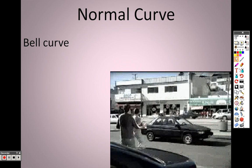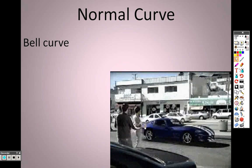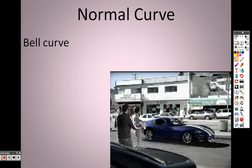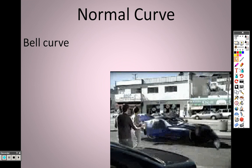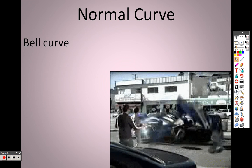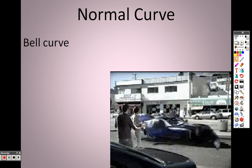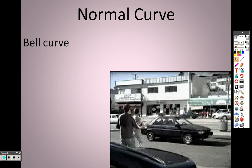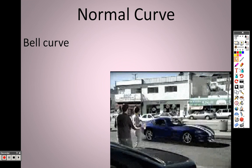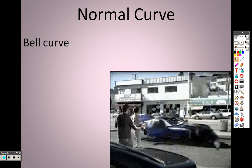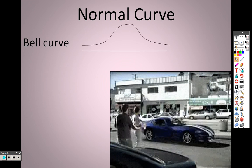An example using grades: on one end you have your A's — only maybe one, two, three A's. On the other end you have your F's, only a handful of F's. The biggest chunk of people, or scores, would be C's, and that's the big bulk of your curve. Here's roughly what a bell curve looks like.